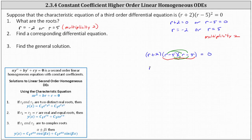This gives us the quantity r plus two times the quantity r squared, and then we have minus five r minus five r, which is minus 10r, and then plus 25.